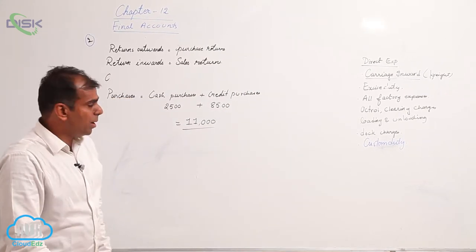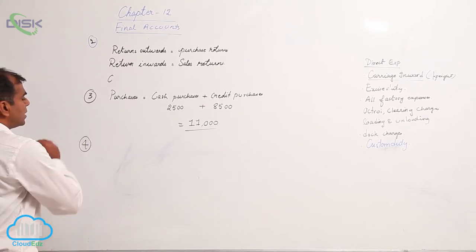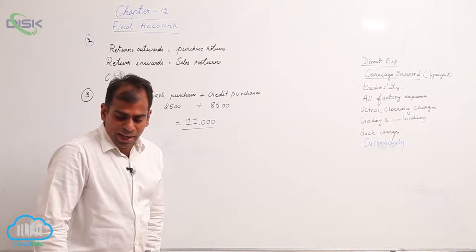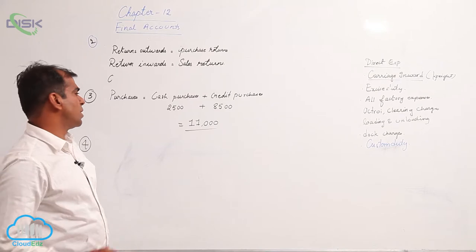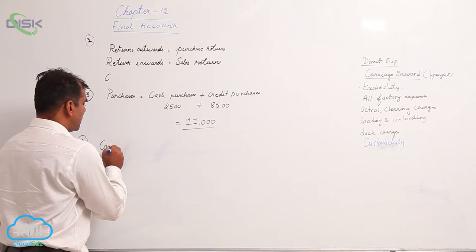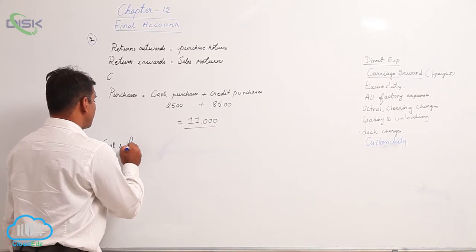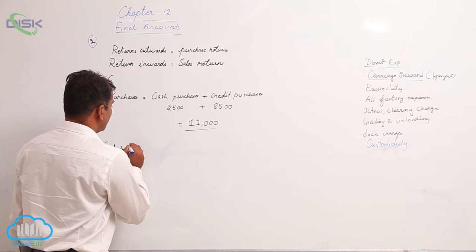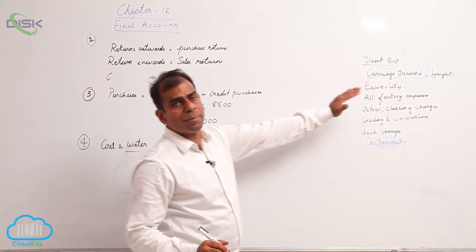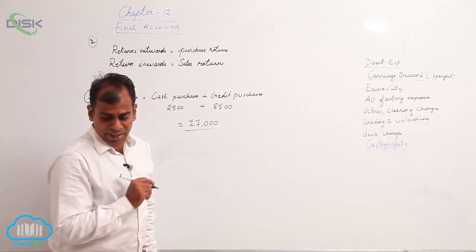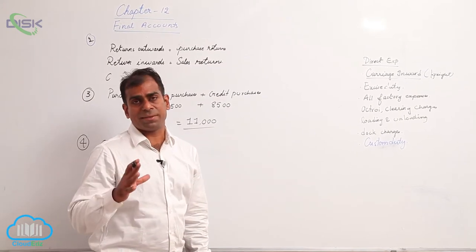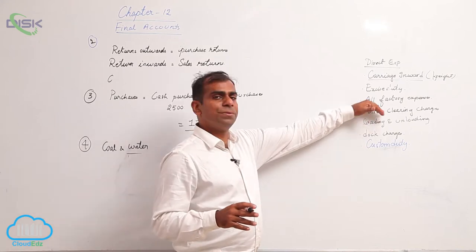Moving on to the fourth problem, the items that are slightly different are: you have coal and water. Coal and water is mostly used in the factory in large quantities, so you would be taking coal and water in the trading account on the debit side because it forms part of your factory expense. Then next is manufacturing expense. The word manufacturing expense itself states that it has something to do with the factory.